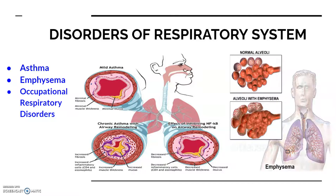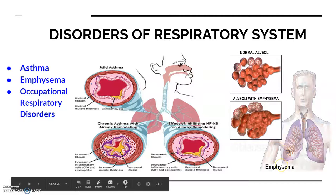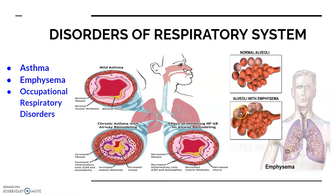Emphysema is a chronic disorder in which alveolar walls are damaged. You can see here the normal alveoli compared to emphysema alveoli where their walls are damaged. Because alveolar walls are damaged, the respiratory surface is decreased. A major cause is cigarette smoking.